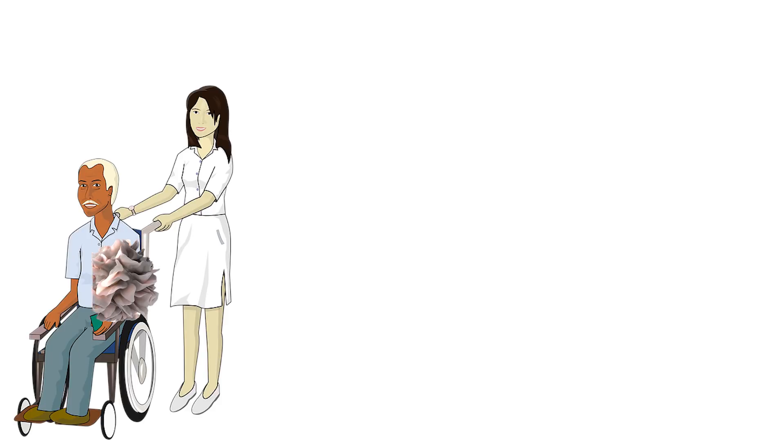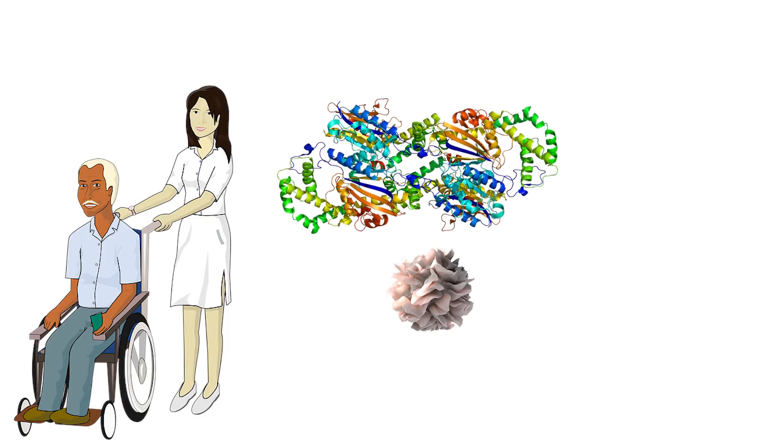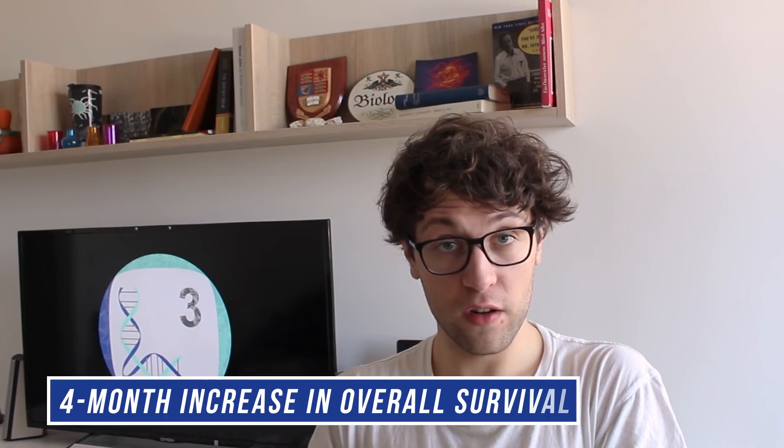In 2010, Provenge was approved by the FDA as the first cancer vaccine for advanced prostate cancer patients. In this treatment, dendritic cells are taken from the patient and then exposed to prostatic acid phosphatase and GM-CSF. The dendritic cells are activated and then reintroduced into the body of the patient, where they provoke immune responses. In a clinical trial, this cancer vaccine led to a four-month increase in overall survival — a result that is rather moderate, and therefore the vaccine has yet to be optimized.